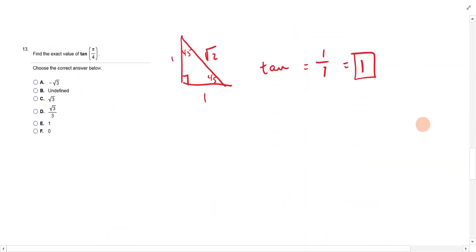Find the exact value of tan pi over 4. So, one thing that you can do, pi over 4 is 45 degrees, so sometimes I will just draw the triangle. Remember 45, 45, and that's a 1, 1, and a square root of 2? Well, tan is 1 over 1 because it's opposite over adjacent, so your answer would be 1.